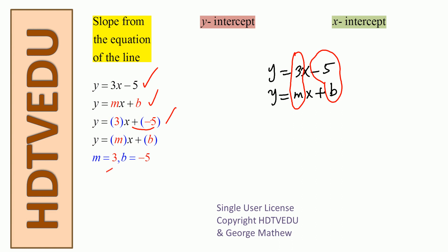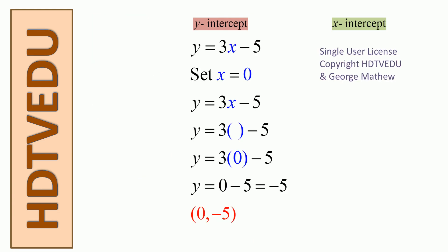For the y-intercept, set x equal to 0 in the equation. In the space occupied by x we put 0, so we get 3 times 0, which is 0, minus 5 is negative 5. So when x equals 0, y equals negative 5 — that is the y-intercept.